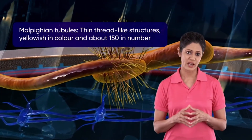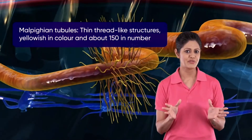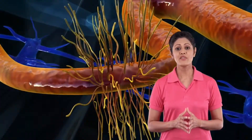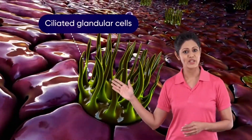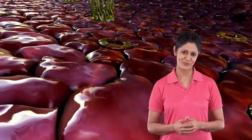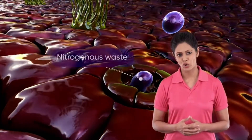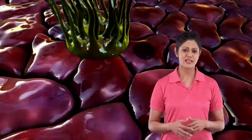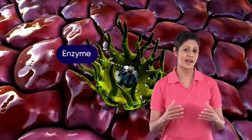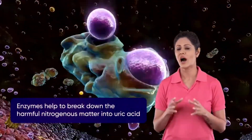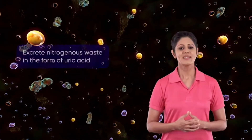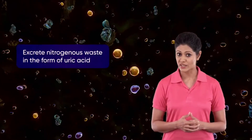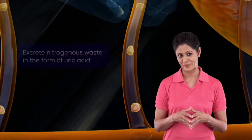The Malpighian tubules are thin thread-like structures, yellowish in color and about 150 in number. If we focus on one tubule and look inside, we observe numerous ciliated granular cells. When harmful nitrogenous wastes are absorbed, these granular cells release enzymes that help to break down the harmful nitrogenous matter into uric acid.